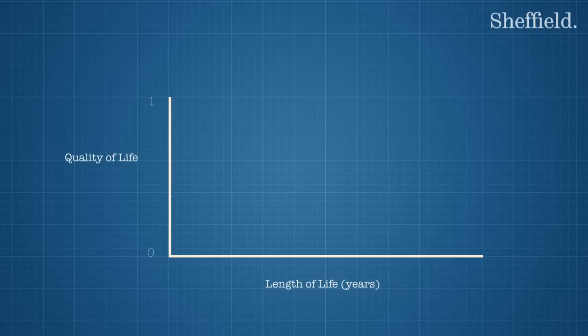Length of life is typically measured in years and quality of life is measured on a scale of 0 to 1, where 1 is equivalent to perfect health and 0 is equivalent to dead.